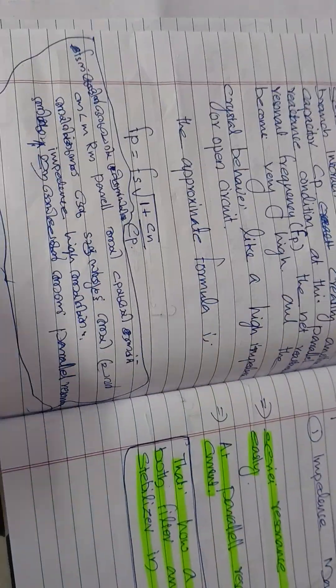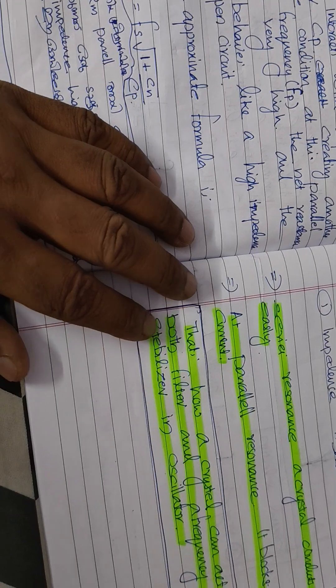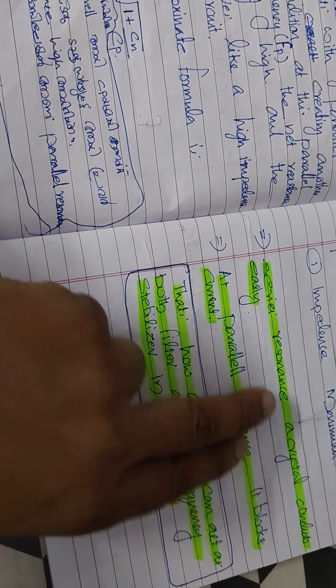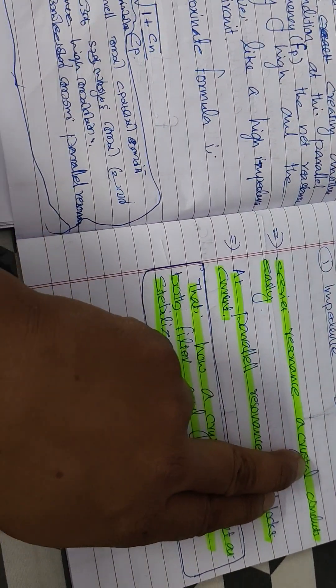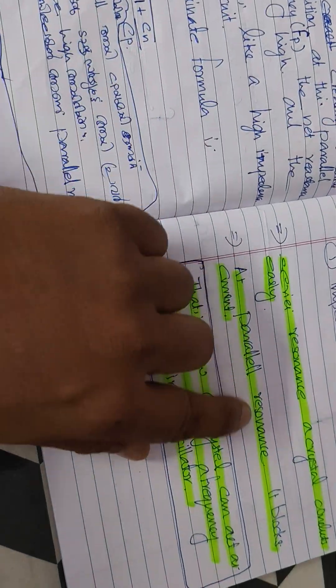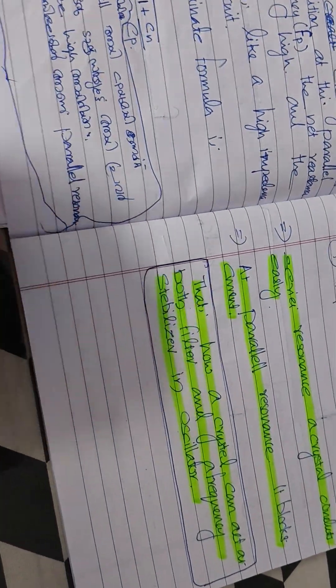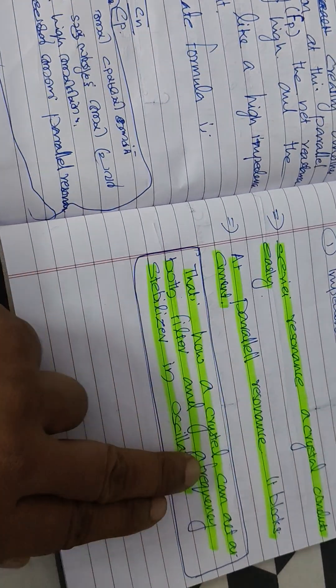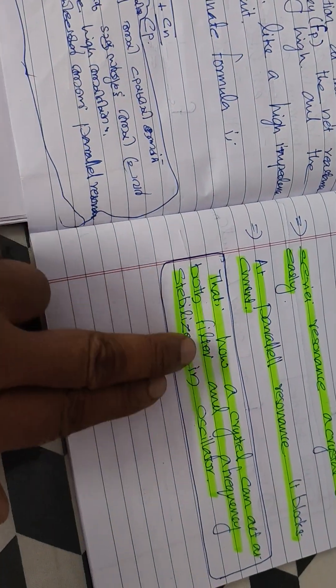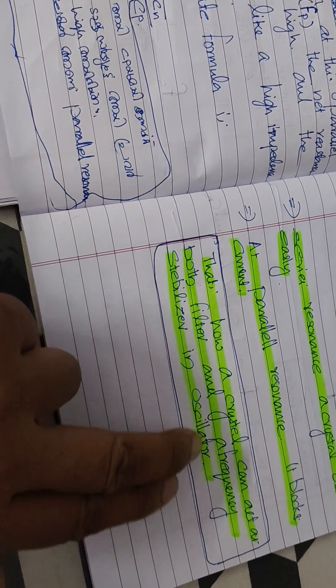In other words, at series resonance a crystal conducts easily, and at parallel resonance it blocks current. That's how a crystal can act as both a filter and a frequency stabilizer in an oscillator.